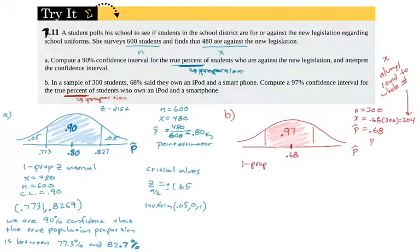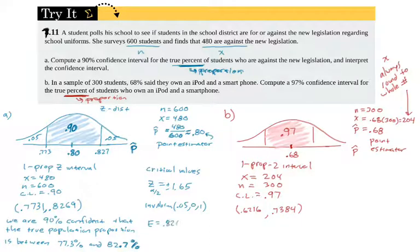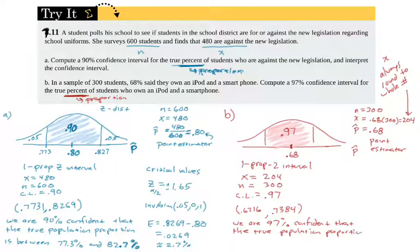And again, it's the percentage, so we know it wants a proportion. So, we're using a 1 prop z interval. And it's going to ask you for your x, your n, and your confidence level. And that's going to give us about 0.6216 and 0.7384. I forgot here to calculate the error. That might be helpful. If you recall, the error is always the upper minus that point estimate there. So, we are 97% confident that the true population proportion is going to be between roughly 62.2% and 73.8% or so.